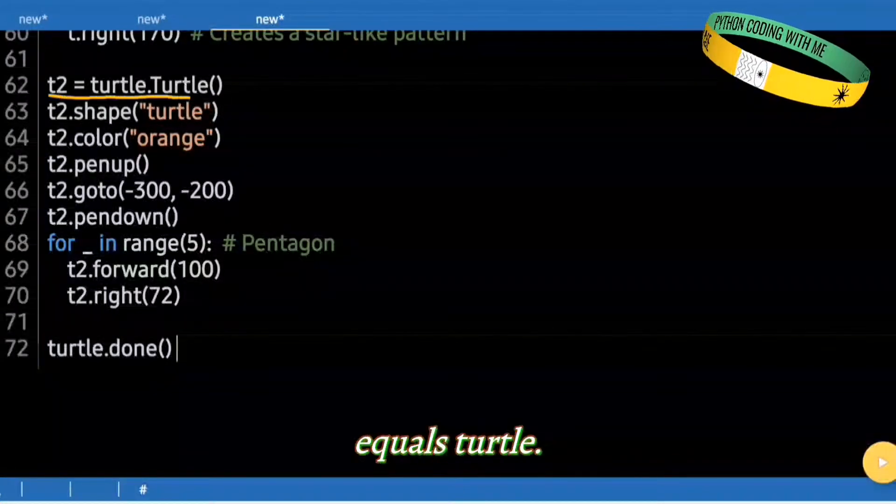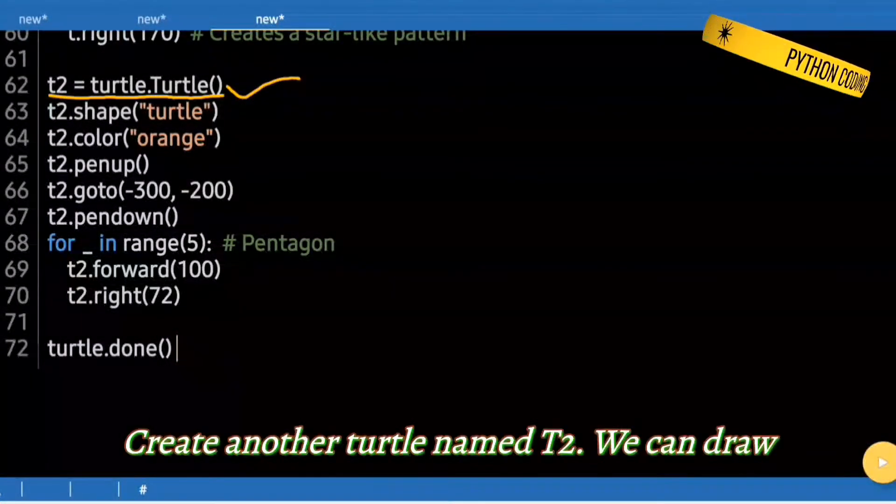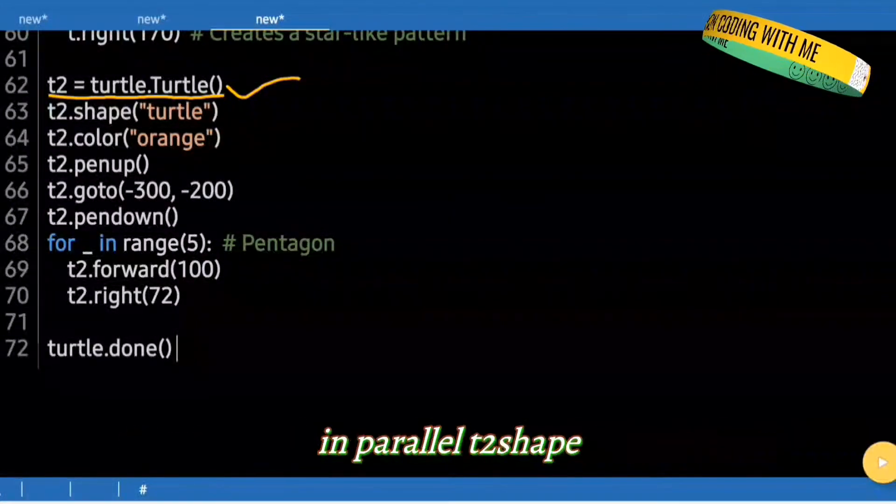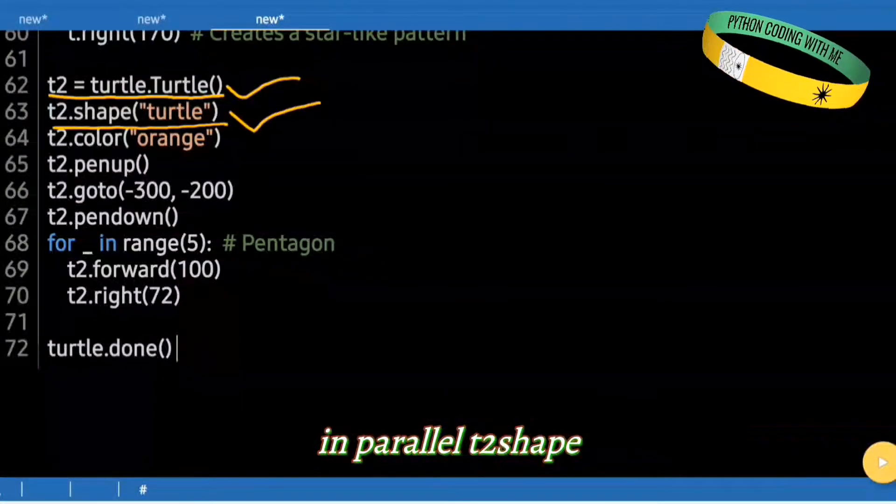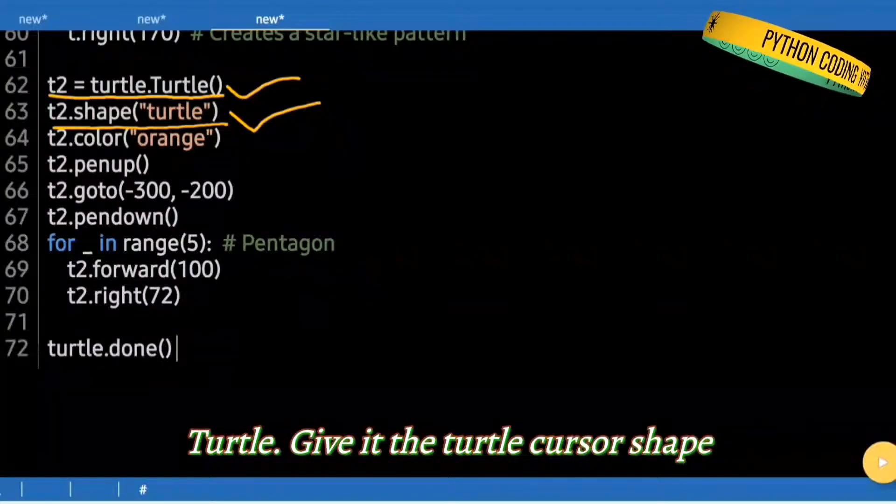t2 = turtle.Turtle(). Create another turtle named T2. We can draw in parallel. t2.shape("turtle"). Give it the turtle cursor shape too.